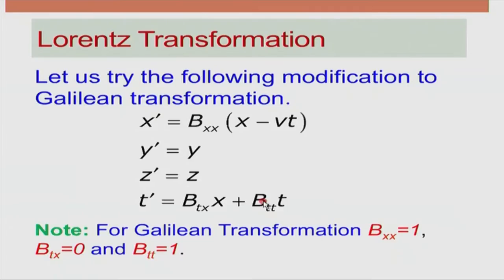Thus, time may have to be taken as frame dependent if we have to make c frame independent. So if we believe that c has to be frame independent, probably the thing we have to look at is that time also has to become a frame dependent quantity. This was the shocking conclusion — the shocking thought of Einstein — which, even after 110 years of relativity, still shocks first-year students.